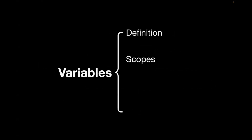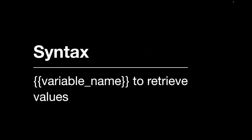Now let's understand the syntax of variables. The syntax is you have to write the variable name inside double curly brackets. For example, the variable name is inside the curly brackets — this is how you can use a variable and retrieve its value.